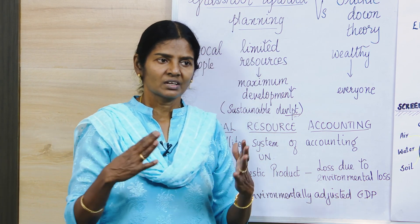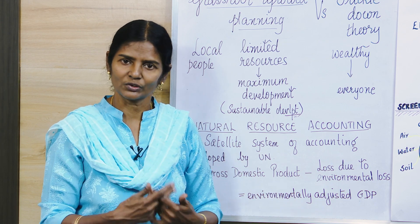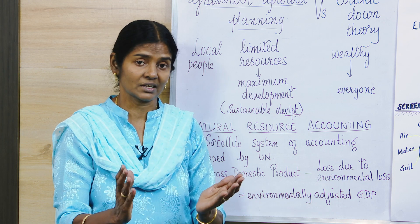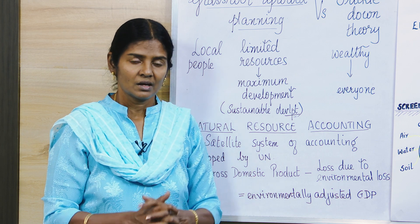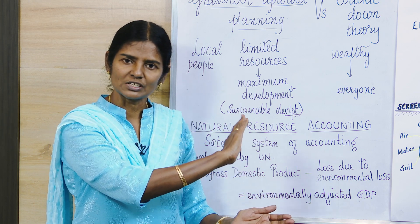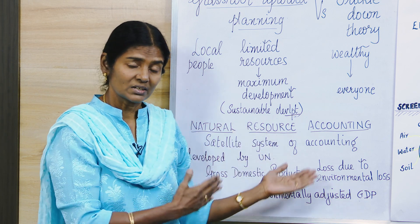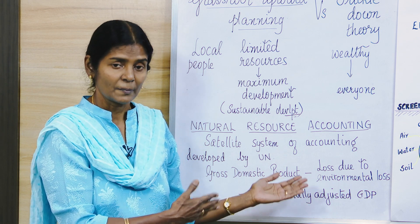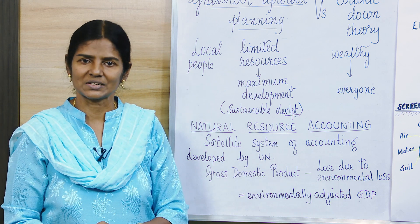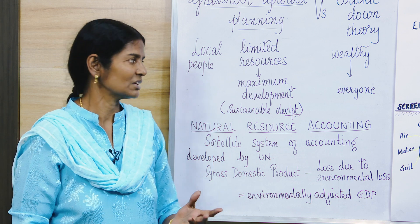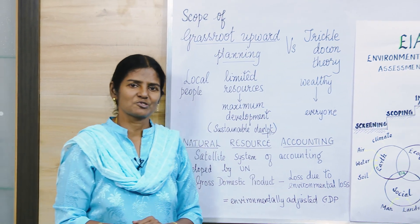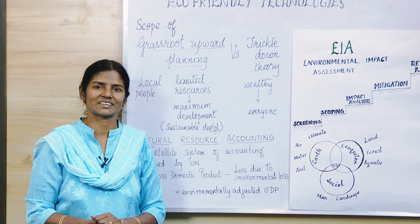For example, a carpenter makes furniture from wood and cuts down a tree worth, say, one thousand rupees to make two chairs and two tables. That thousand rupees is a loss not coming into the account, while the profit from the furniture is already recorded. The UN suggests we must take that loss into account and subtract it — then only the real profit comes. So we learned about EIA, grassroot upward planning, and natural resource accounting. I hope you enjoyed this video — don't forget to like, share, and subscribe!